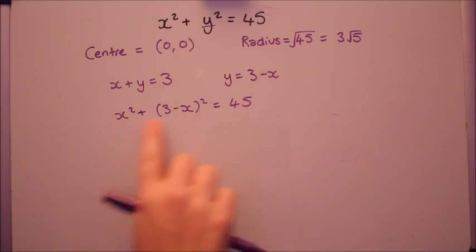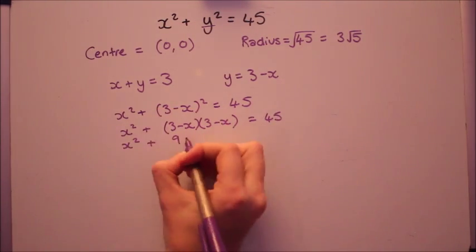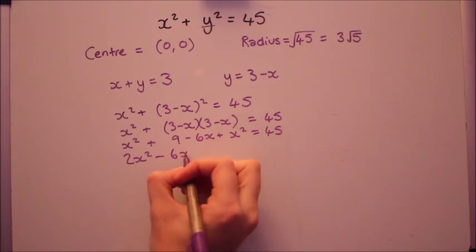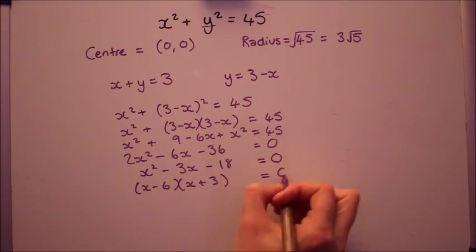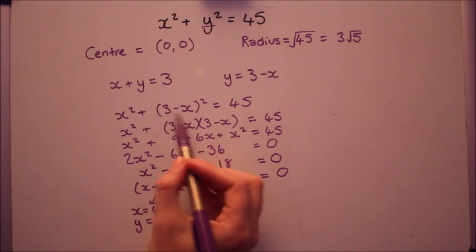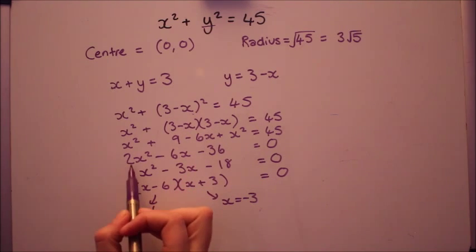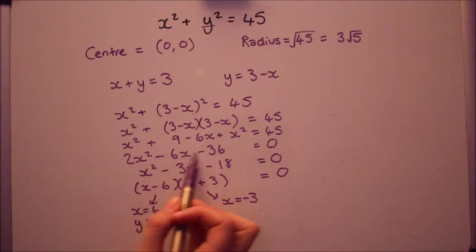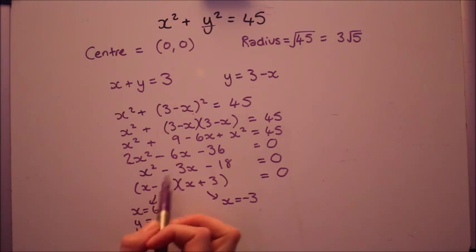Now you can expand, collect the terms and solve. OK, I hope you're happy with that so far and you're agreeing with it. Please do remember when you're squaring a bracket you need to do it as a double bracket expansion. At this point here I divided everything by 2 because that was a common factor. But even if you didn't spot that you should get the same answers anyway.